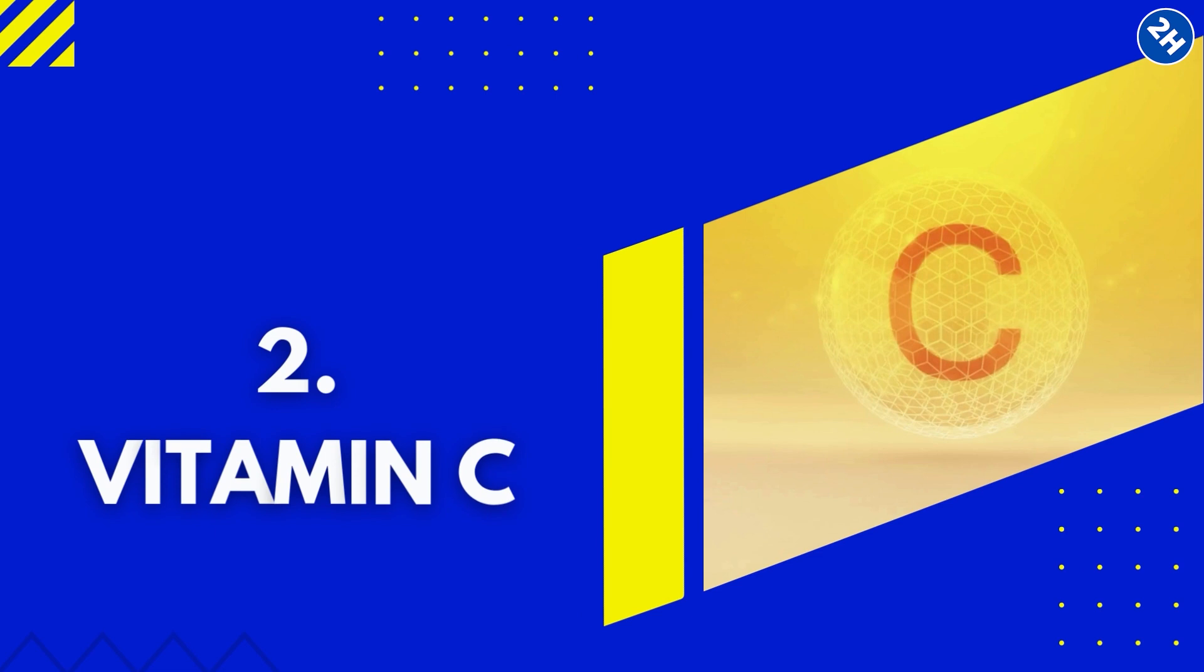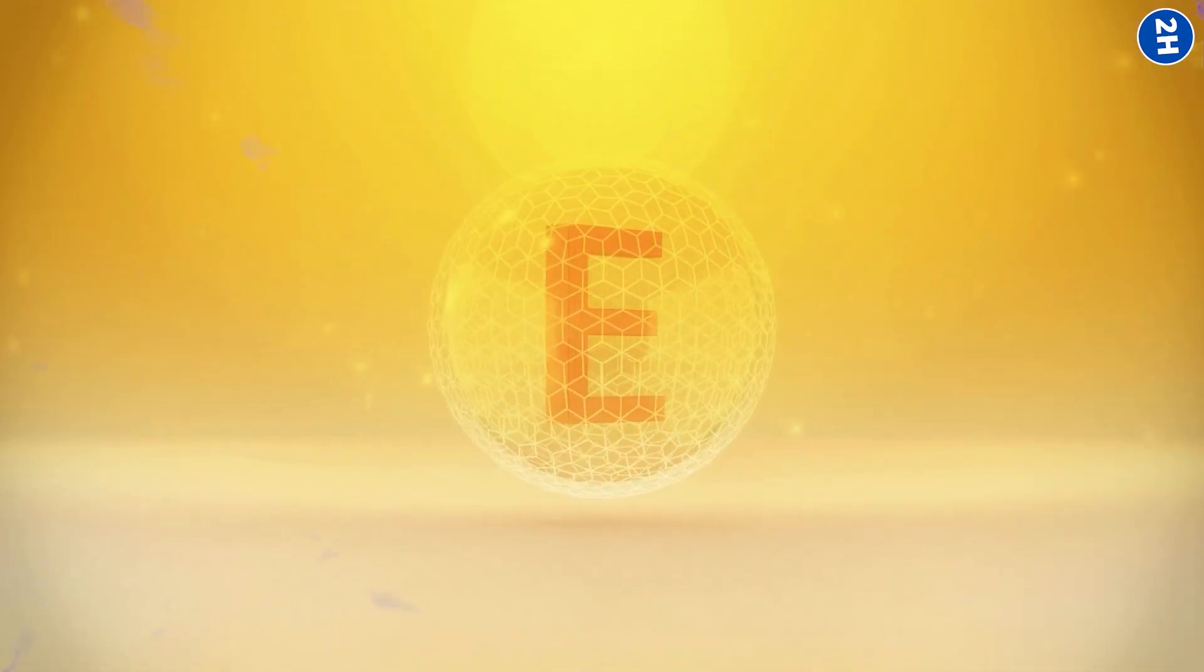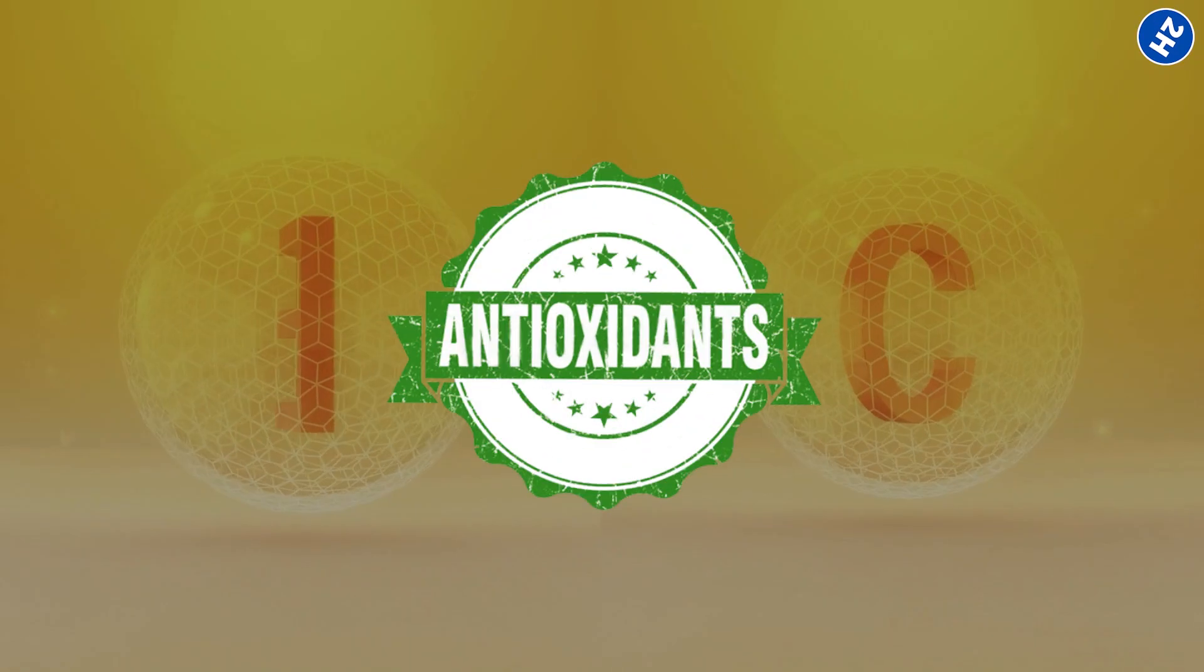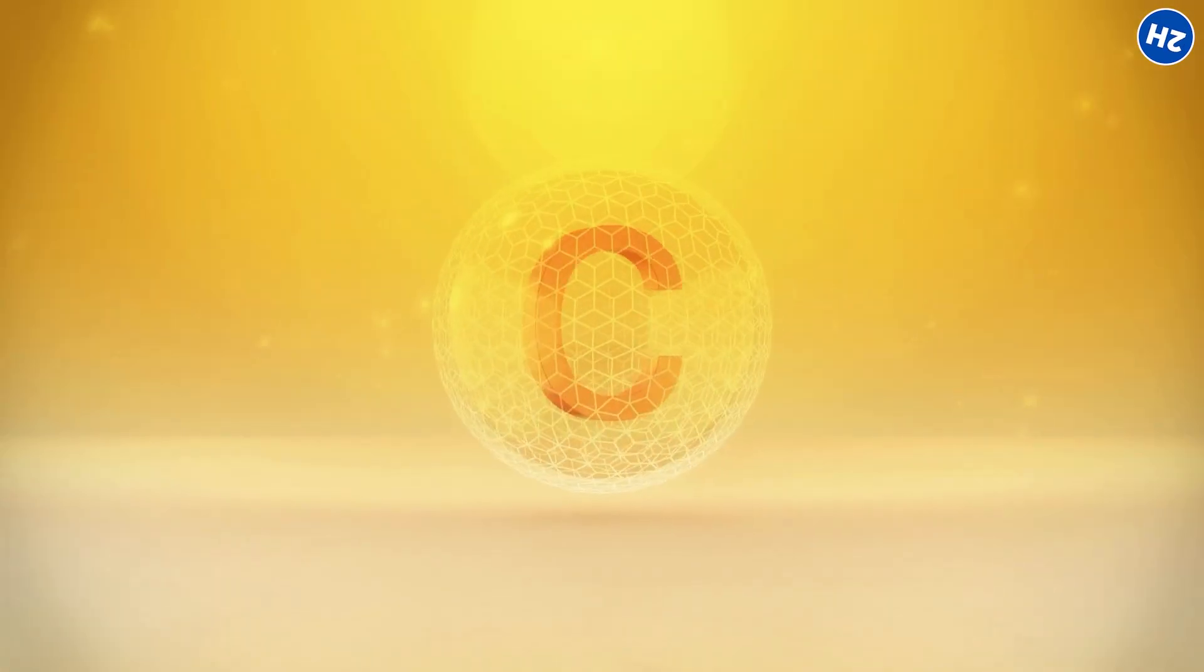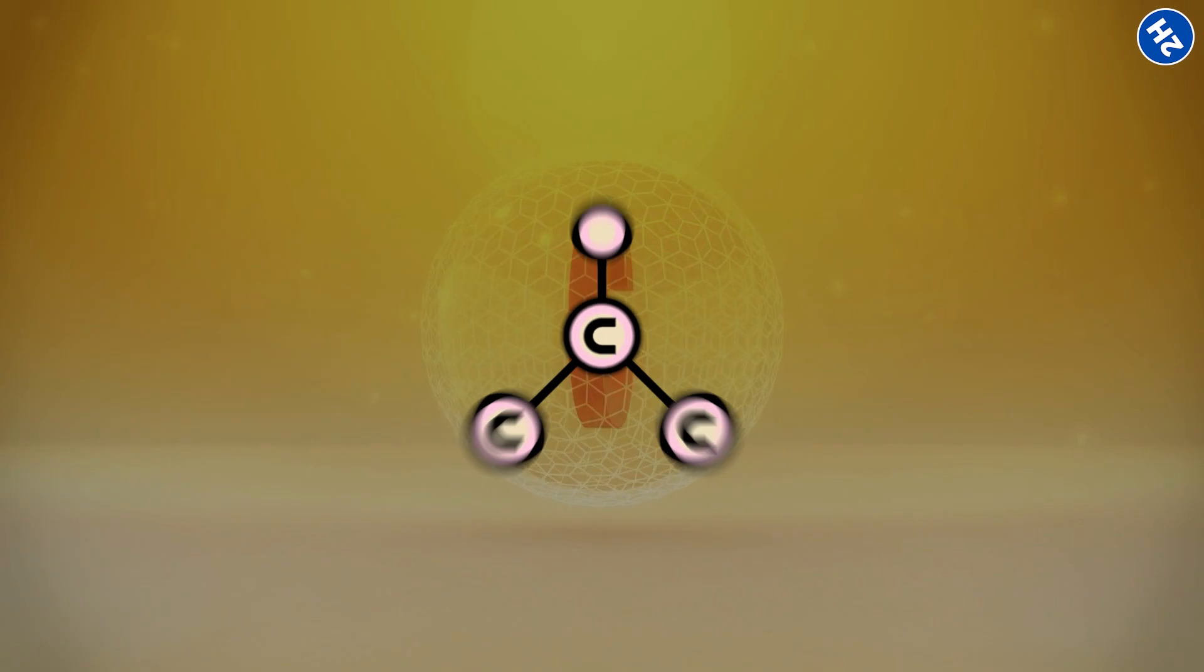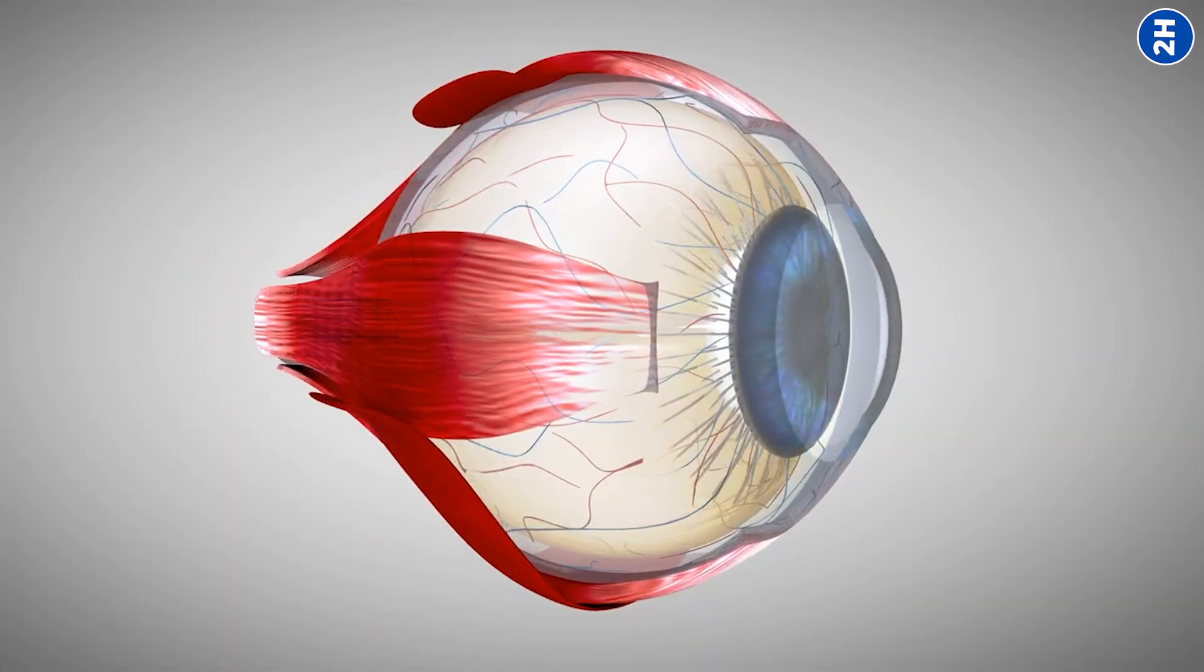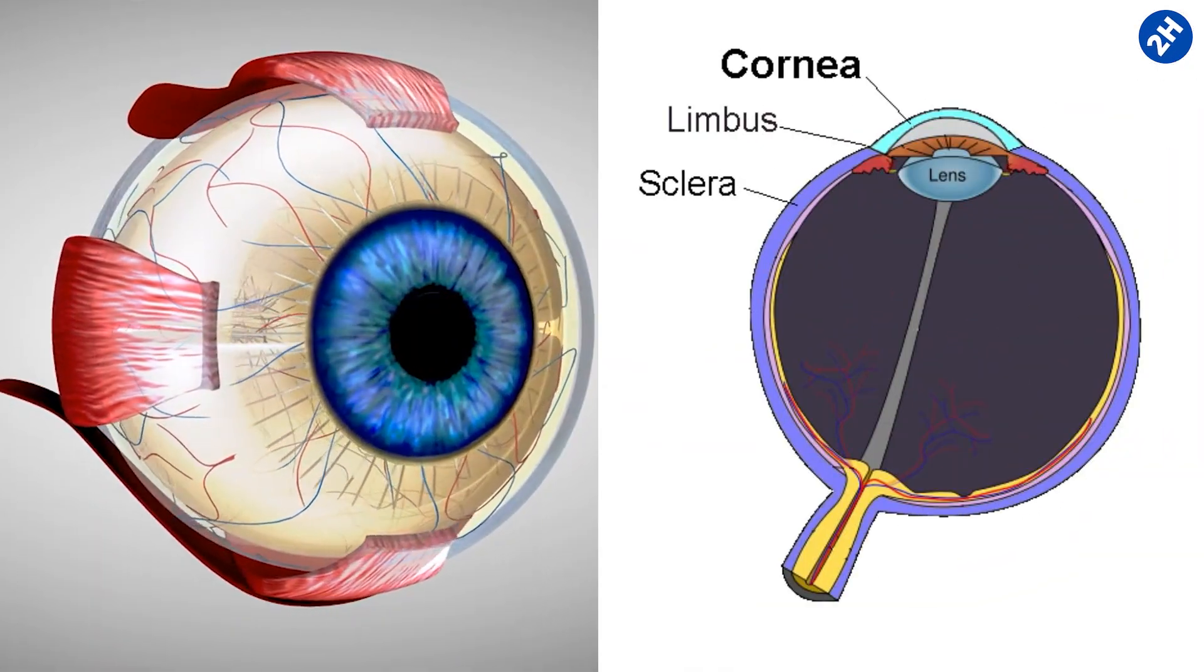Number 2. Vitamin C. Like vitamin E, vitamin C is a powerful antioxidant that saves your eyes from harmful free radicals. Additionally, vitamin C is necessary for the production of collagen, a protein that gives structure to your eyes, especially in the cornea and sclera.